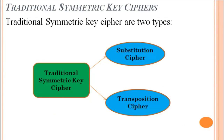The other one is traditional symmetric key cipher. Traditional symmetric key ciphers are classified in two categories: first one is substitution cipher and the other one is transposition cipher. Substitution ciphers and transposition ciphers are techniques by which we convert plain text or the original message into cipher text.